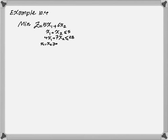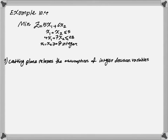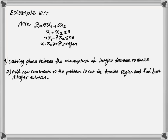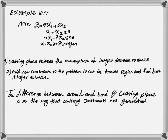An integer programming problem looks very similar to a linear programming problem, with the assumption that all your x variables are also integer. To solve this using the cutting plane method, we first relax the assumption of integer decision variables and solve the problem as a simple linear programming problem. After that, we introduce new constraints called cutting constraints to cut the feasible region and find the best integer solution, similar to the branch and bound method. However, the difference between branch and bound and cutting plane is in the way the cutting constraints are generated.